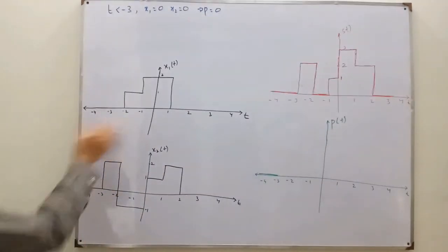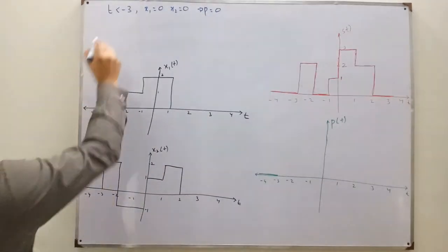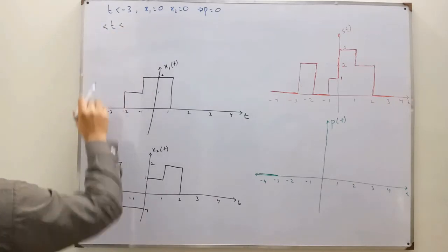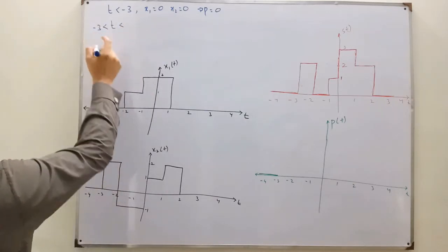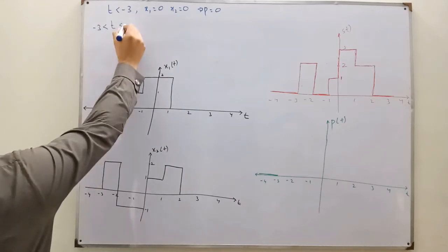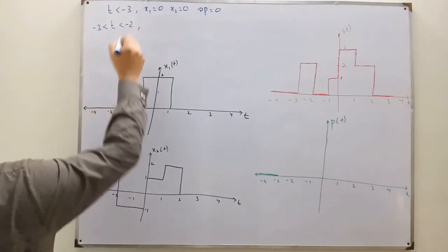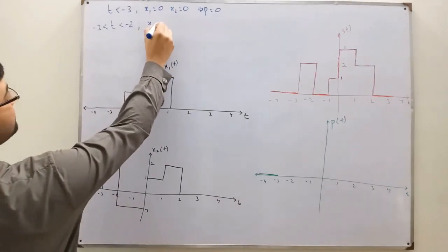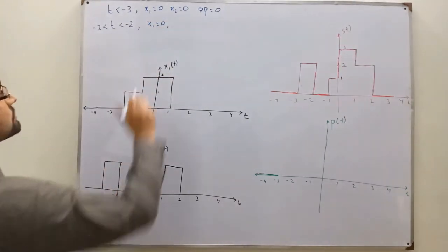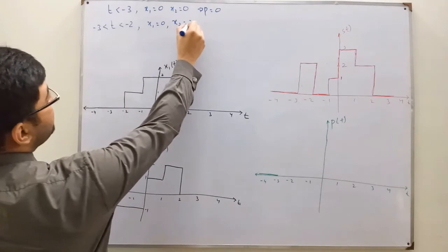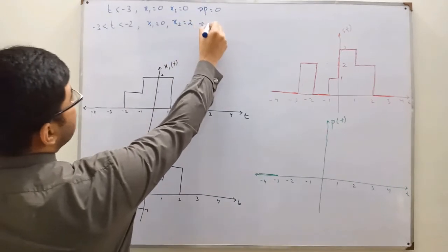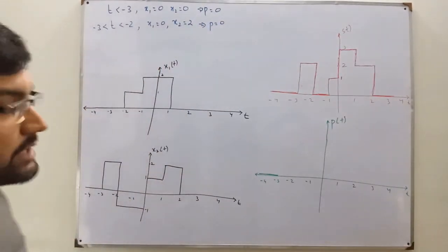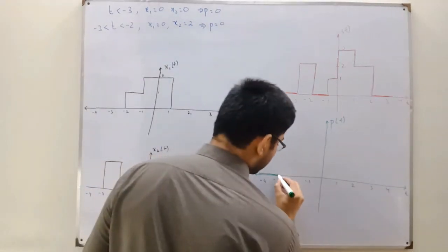From negative 3 to negative 2: when t is greater than negative 3 and less than negative 2, x1 is 0 and x2 is 2. But whatever the value, the product is 0 because one of them is 0. So from negative 3 to negative 2 it also stays 0.